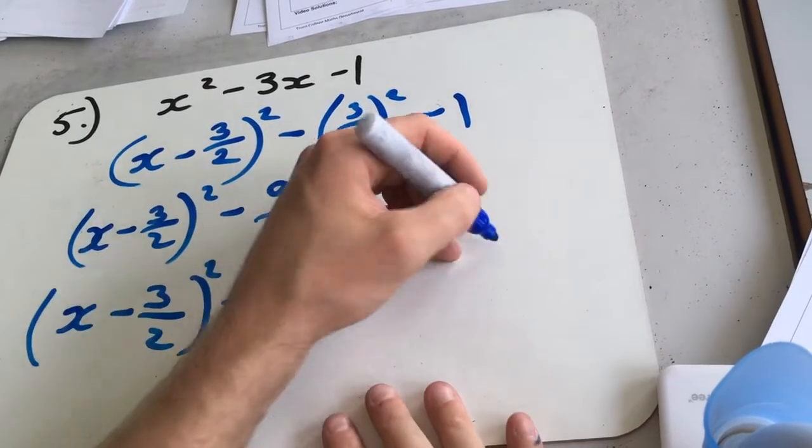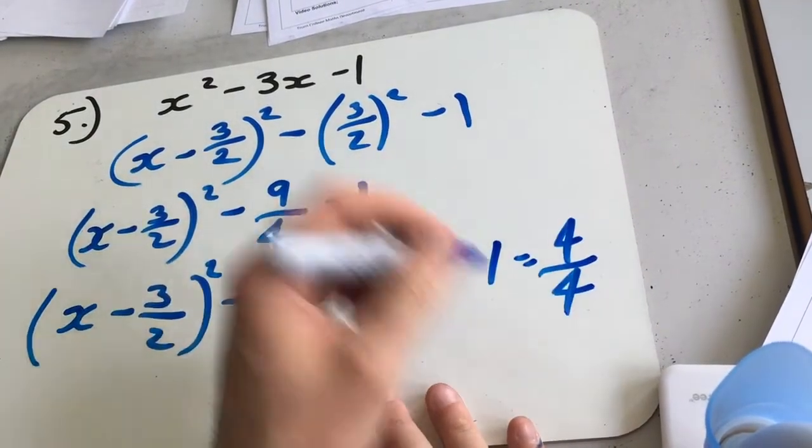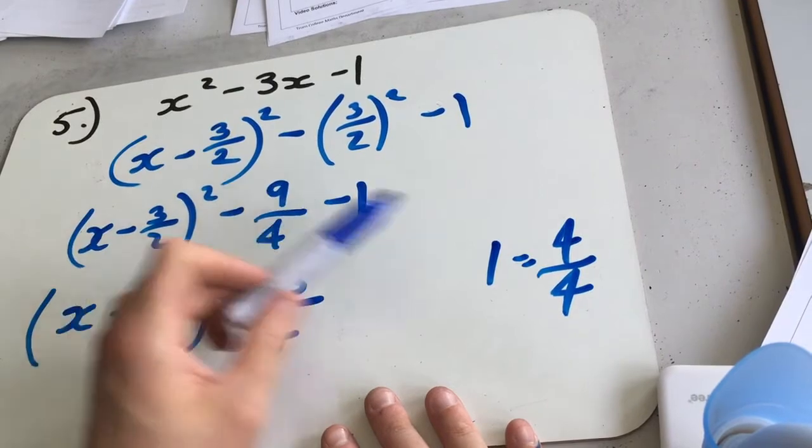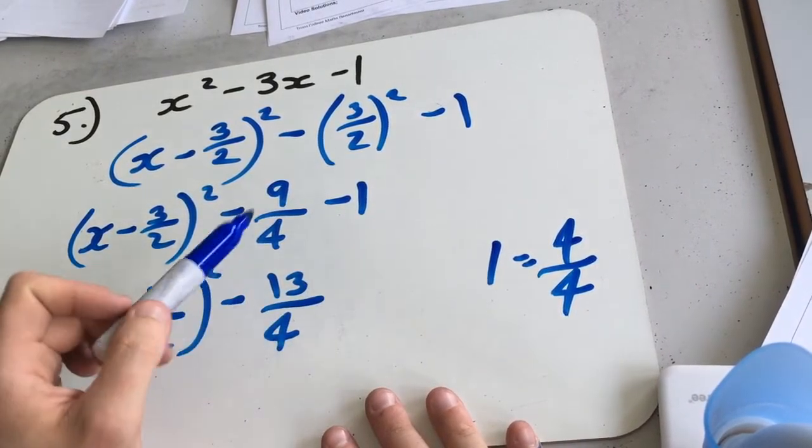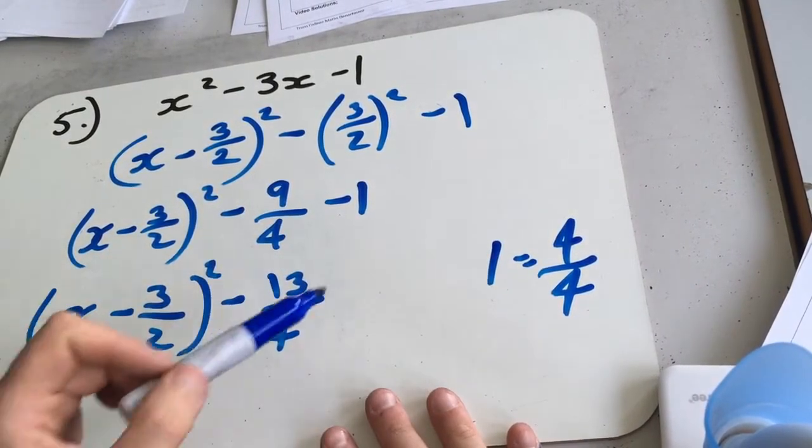So to get 13 over 4, I basically changed 1 as being 4 over 4. Then subtracted 9, take 4. Well, minus 9 minus 4 will give us minus 13.